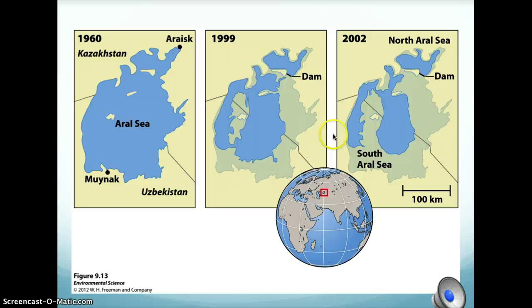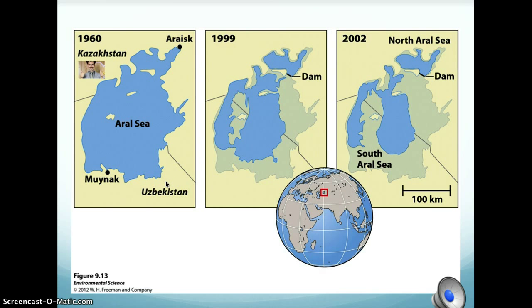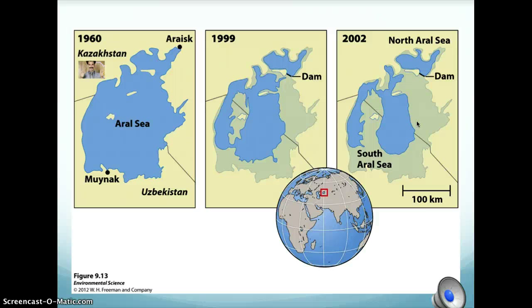One big and probably the most infamous example of the consequences of water diversion began in the 1950s, when the Soviet Union decided to divert water from two rivers that fed into the Aral Sea — an area now on the border of Kazakhstan and Uzbekistan. The Aral Sea used to be the fourth largest lake in the world by surface area, but it decreased by about 60% from 1960 through 2002. As fresh water was diverted away, the salinity of the sea increased, with devastating effects on local fish populations.